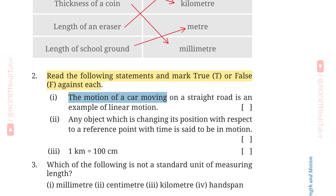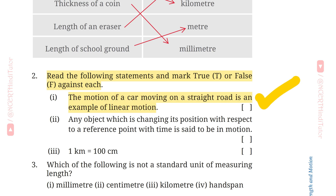First: The motion of a car moving on a straight road is an example of linear motion. Answer: True. This one is true and correct.